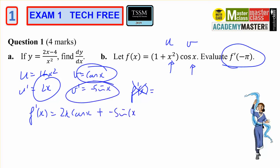negative sine of x times 1 plus x squared. And then f dash of minus pi will be 2 times minus pi, cos of minus pi plus negative sine of minus pi, 1 plus pi squared.